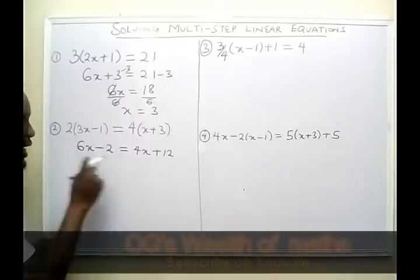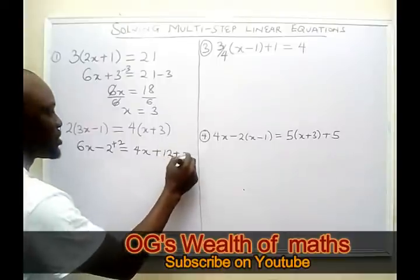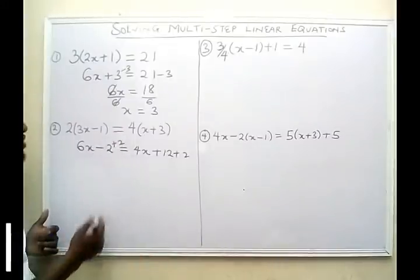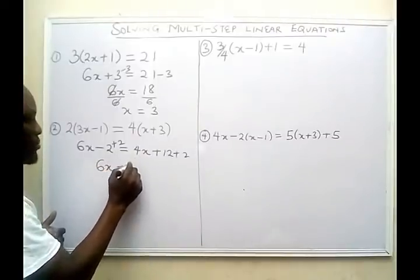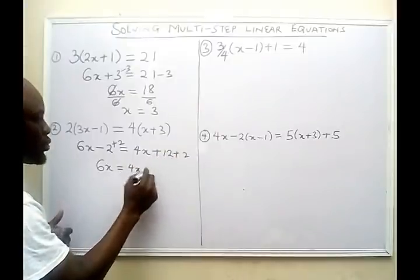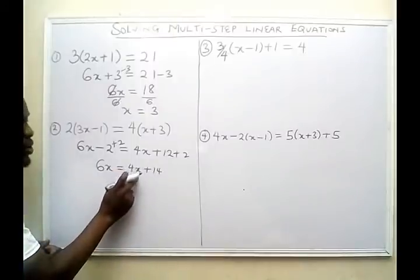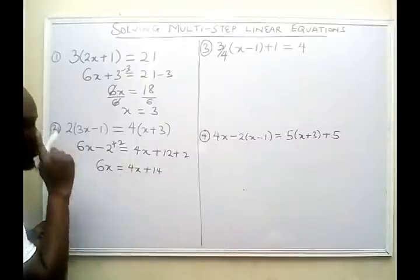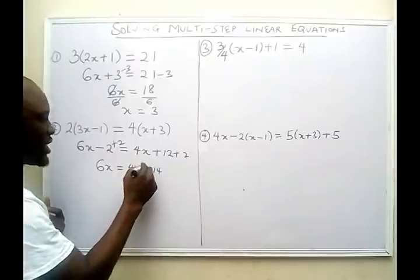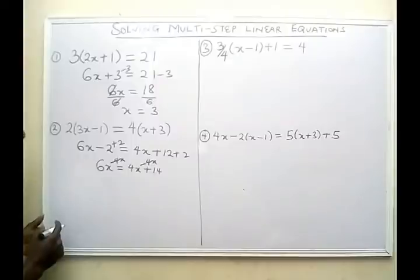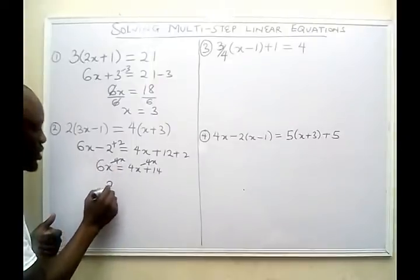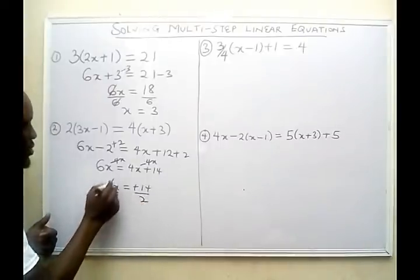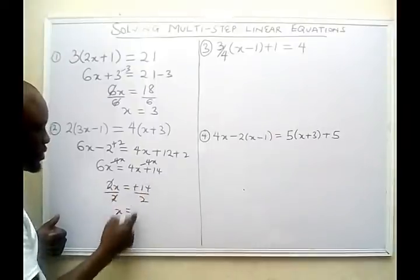I have minus 2 here and I don't want it on this side, so I'm going to add 2 to both sides of the equation. Minus 2 plus 2 gives me 0, so my new expression becomes 6x equals 4x plus 12 plus 2, giving me plus 14. Next, I don't want 4x on this side, so I subtract 4x from both sides. 6x minus 4x gives me 2x, and 4x minus 4x is 0, leaving plus 14. Dividing both sides by 2, x equals 14 divided by 2, so I get 7.